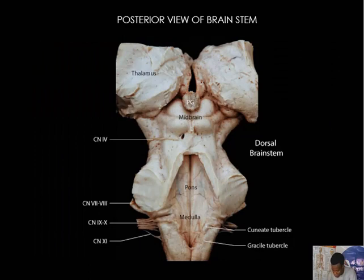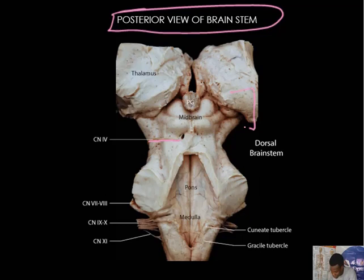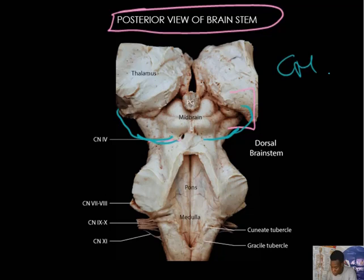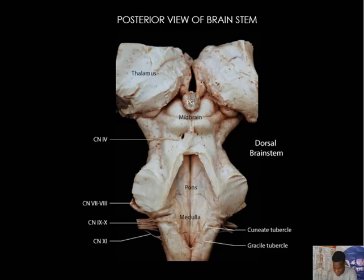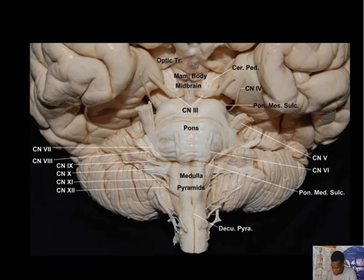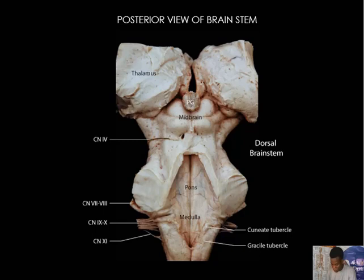Here is the posterior view of the brainstem. The trochlear nerve emerges from the back of the midbrain and finds its way to the front. It is the only cranial nerve coming from the back of the brainstem — all other cranial nerves emerge from the front. Any of those nerves can be pinned and you'll be asked to identify them, so take good note.